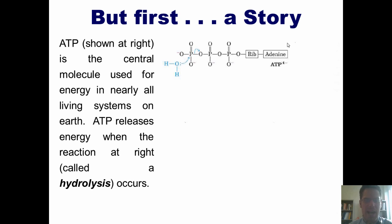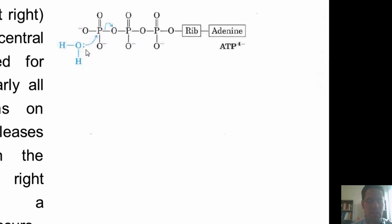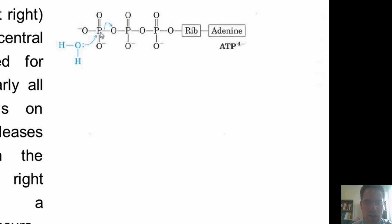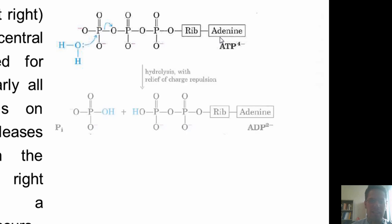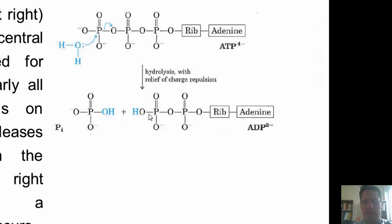ATP releases energy when the reaction shown here to the right, which is called a hydrolysis reaction, occurs. What happens is water inside a living organism can come in and attack the phosphorus of one of these phosphate molecules. In doing so, it forms a bond with that phosphorus and pushes the electrons between this phosphorus and the next oxygen in the line onto this oxygen. That then gives us this product. One of the protons on the original water has been transferred from it to the resulting negatively charged oxygen over on this side of the molecule.